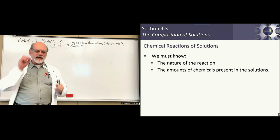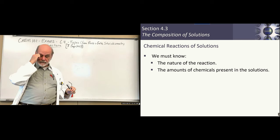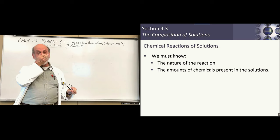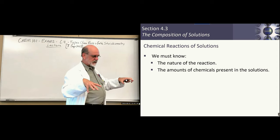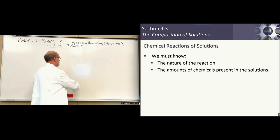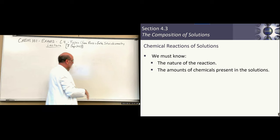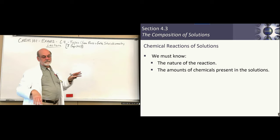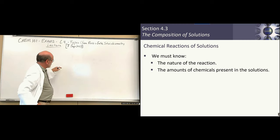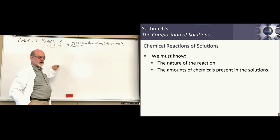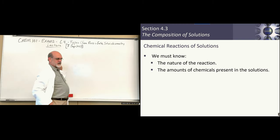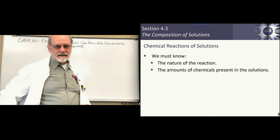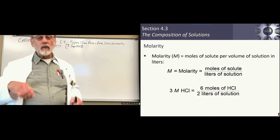To characterize chemical reactions in solutions when we put two solutions together, first we need to know the nature of the reaction and the components of the solutions so we can write a balanced equation. We also need to know the concentrations. If we don't know the concentrations, we don't know how many moles of each one is there — and if we don't know how many moles there are, there's no stoichiometry. We can't calculate the products.